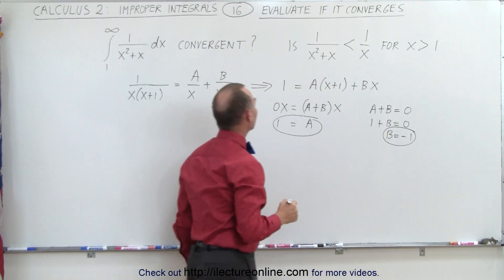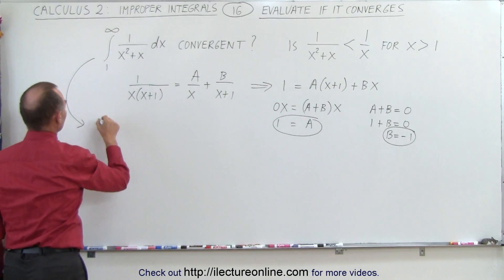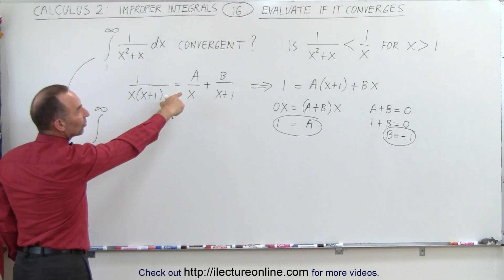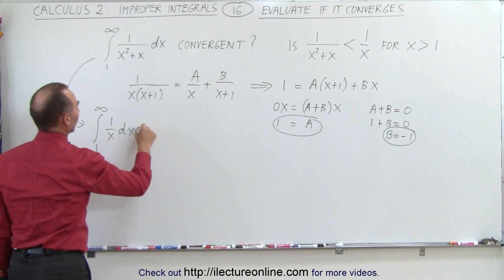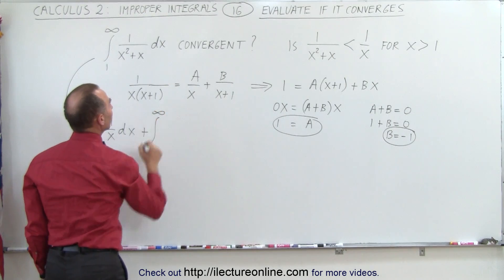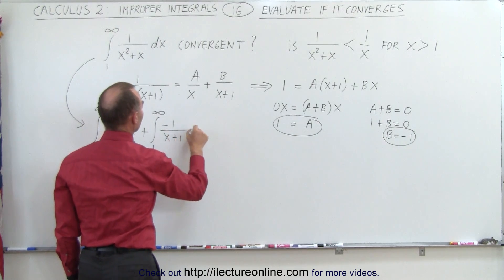Now we know what the two fractions are, which means that this integral can be rewritten as an integral from 1 to infinity of 1 over x dx plus the integral from 1 to infinity of negative 1 over x plus 1 dx.